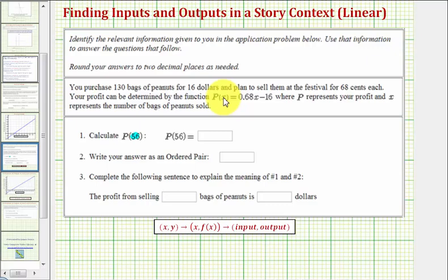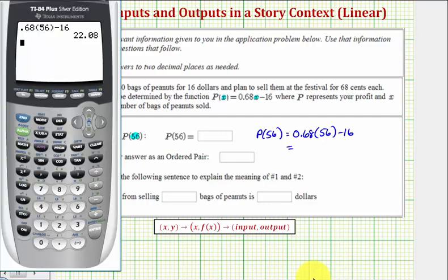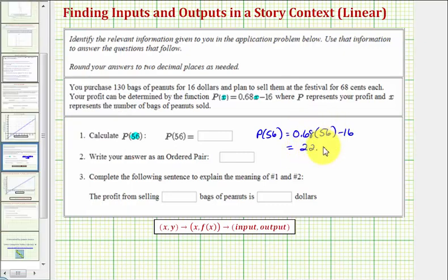So we'll substitute 56 for x in our profit function. So p(56) is equal to 0.68 times 56 minus 16. And now we'll go to the calculator to evaluate this. I've already done this to save some time. Notice how it comes out to 22.08, which is our profit when we sell 56 bags of peanuts.